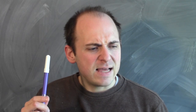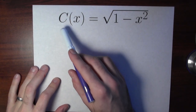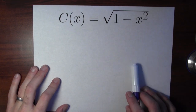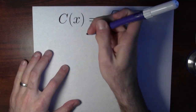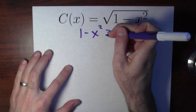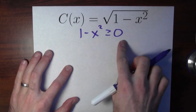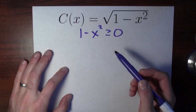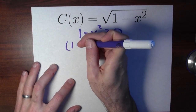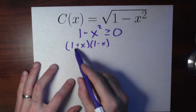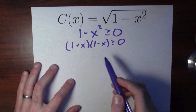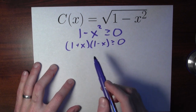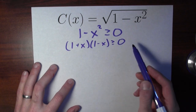Let's do one more example — a square root problem where I've also got an x squared term. Let's calculate the domain of the function c, where c of x is the square root of 1 minus x squared. The domain consists of all the inputs for which the rule makes sense, so I'm looking for which values of x make the thing under the square root non-negative. One way is to factor 1 minus x squared as 1 plus x times 1 minus x. I'm looking for when that product is non-negative, which is easier to think about because I just need to figure out when these two terms have the same sign — both positive or both negative.